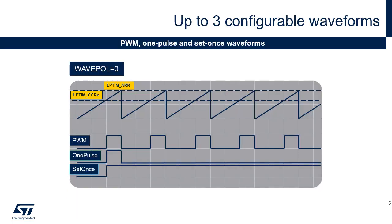The LPTIM_CCRX and LPTIM_ARR registers, in conjunction with the WAVE bit field from the LPTIM_CFGR register and SNGSTRT from the LPTIM_CR register, are used to control the output waveform. The output waveform is either a typical PWM signal with its period and duty cycle controlled by the LPTIM_ARR and LPTIM_CCRX registers respectively, or it is a single pulse with the last output state defined by the configured waveform. If the last output state is the same as at the waveform's beginning, then one-pulse mode is configured; otherwise, set-once mode is configured.